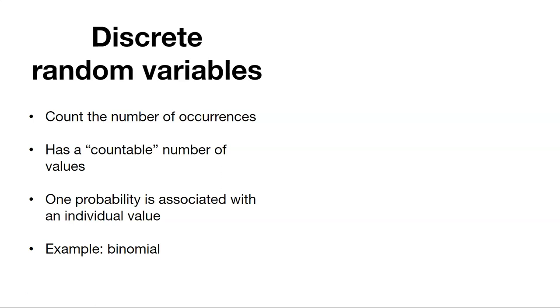One probability is associated with each individual value. The probability of getting three heads is one over eight. So an example of this is the binomial. There's only one or another outcome, two different outcomes for possibilities.